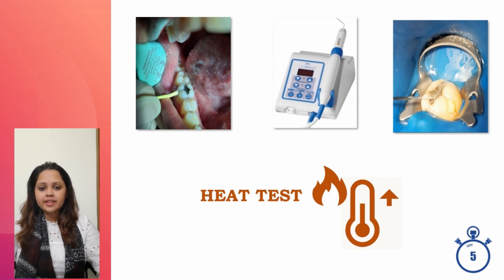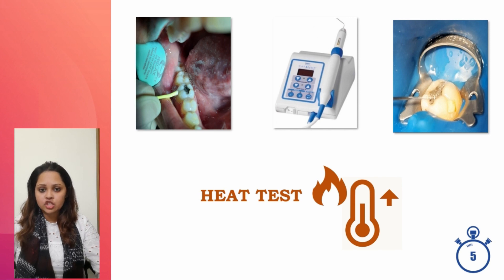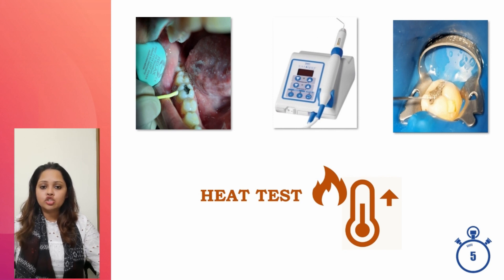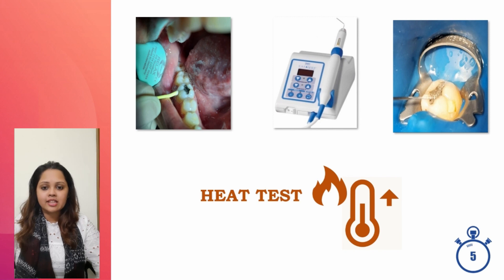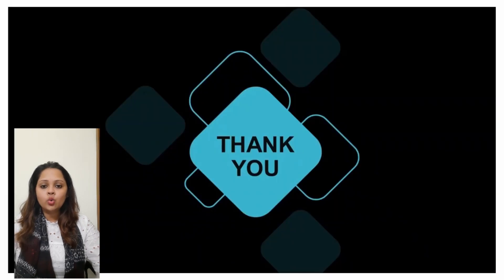One disadvantage of the heat test is that excessive heating may result in pulp damage. Prolonged heat application results in biphasic stimulation of the A-delta fibers initially, followed by activation of C-fibers, which can result in a lingering pain. Therefore, heat tests should not be applied for more than five seconds. However, inadequate heating of the gutta-percha stick could result in a stimulus too weak to elicit a response from the pulp.